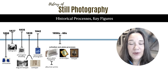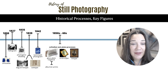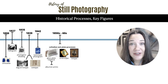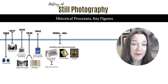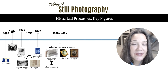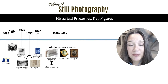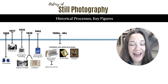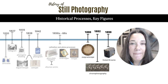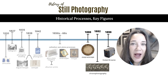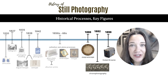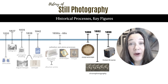Moving into our historical processes and key figures, this is the timeline we've been adding to every week in our modules. This is kind of where we left off last time with the collodion wet plate process. We looked at the glass plate negatives and how they were used to make albumin prints, ambertypes, and tintypes. And this week, we are building on to that by looking at things like the zoopraxiscope and chronophotography — 1880 inventions — and then the Kodak Brownie.